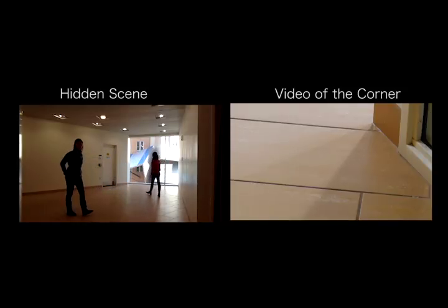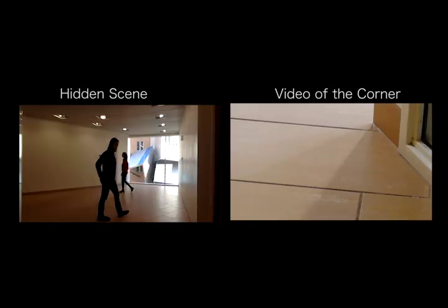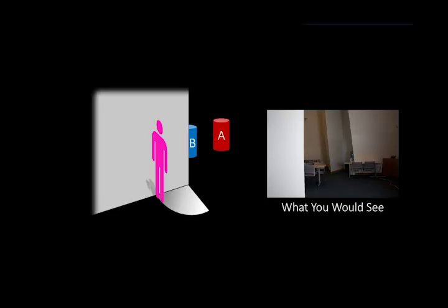To show how to use the penumbra to recover the hidden scene, let's take a look at a simple example. Imagine two people, one red and one blue, hidden behind a wall. If you were standing with your shoulder up against the wall, you wouldn't see any of the scene behind the corner.